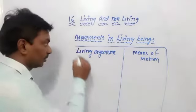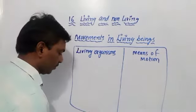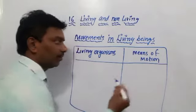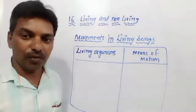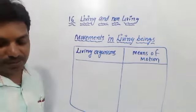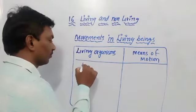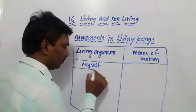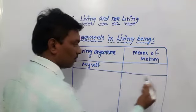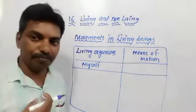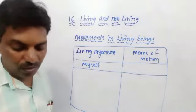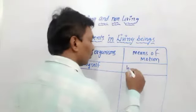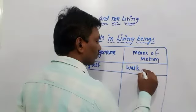Is the table appearing to you? If it is not possible to see clearly, I will write and explain the remaining part orally. The first one is myself. What is the means of motion for myself? I can walk and run. Walk and run — those are the movements. I can walk and I can run, and you also move the same way.